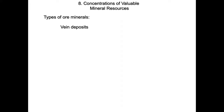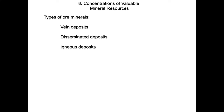One of the reasons we talk about minerals and are interested in them is that they are worth a lot of money — a valuable commodity to everybody on earth, whether you know it or not. The types of ore minerals that we find are often found in distinctive types of deposits, such as vein deposits, disseminated deposits, igneous deposits, and sedimentary deposits.